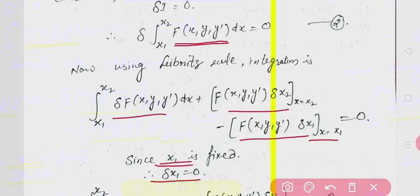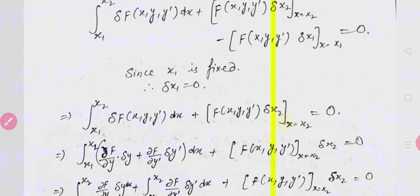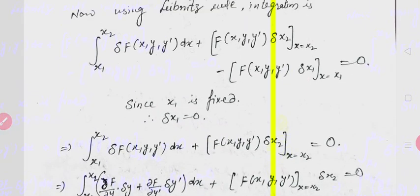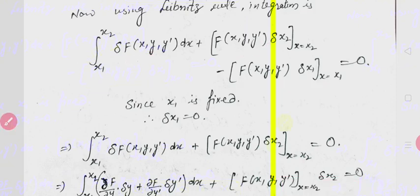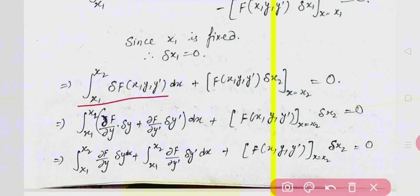Since x1 is fixed, delta x1 = 0, so the third term is eliminated. We write this as: integral from x1 to x2 of delta f, plus f(x2) * delta x2, equals 0. Separating the terms: f at x2 and delta x2 is given at x2.